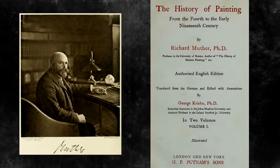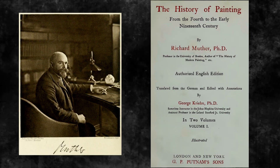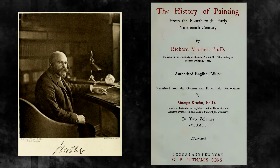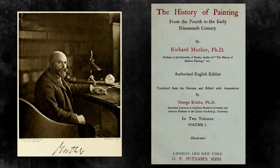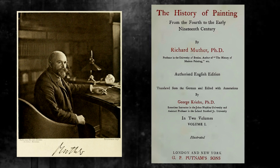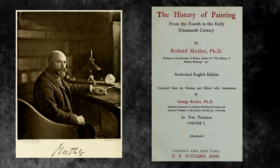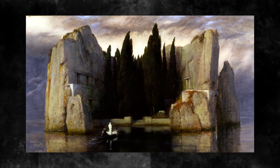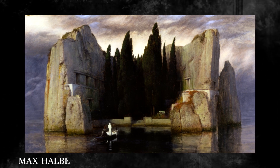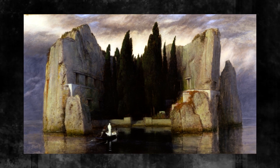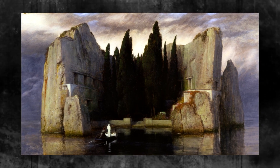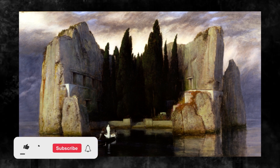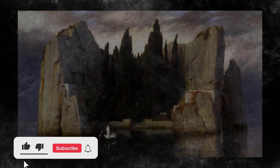In his history of painting in the 19th century, Richard Muther, published in 1894, celebrated him as the founder of a new, intensely yearned-for art. The writer Max Halbe notes that almost every upper-class home in Germany had at least one reproduction of one of his paintings.